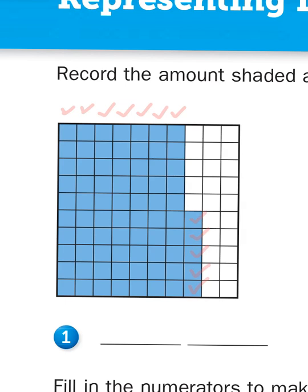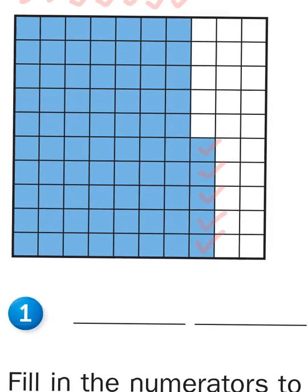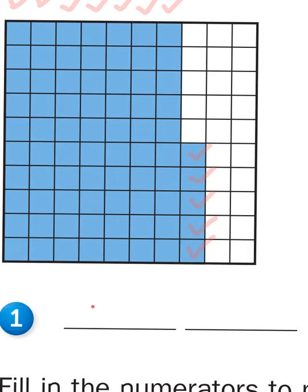Which gives me a total of 75 hundredths. So that's a fraction, if you remember. If there are 100 parts, I would write the number of shaded parts above it, 75 hundredths.